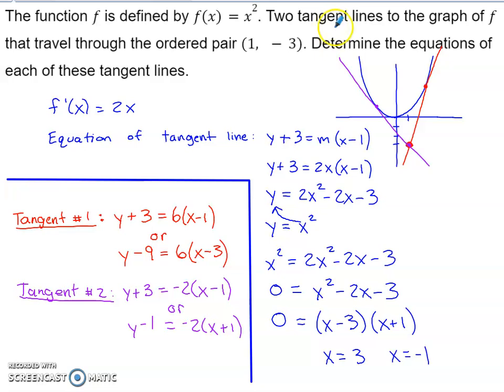It says that two tangent lines to the graph of f travel through the ordered pair 1, negative 3. We want to try to determine the equations of each of these tangent lines.